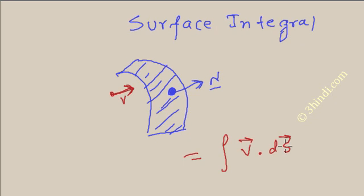Where s is the vector, suppose this is s, this is ds. ds is a small elementary surface and it is represented in vector form.